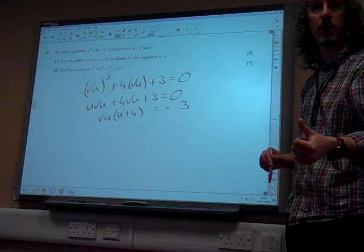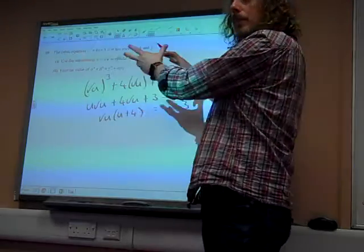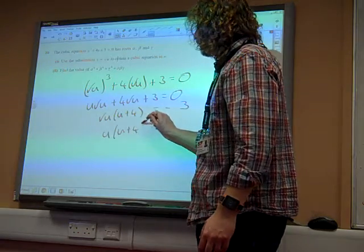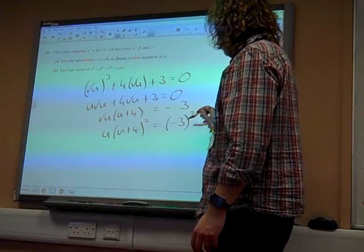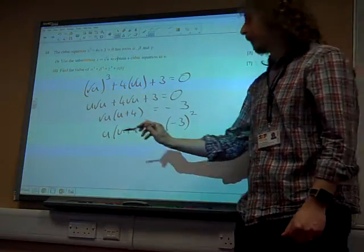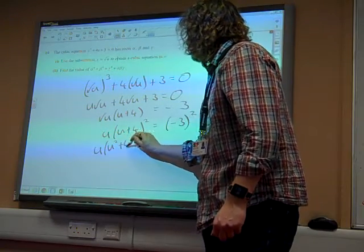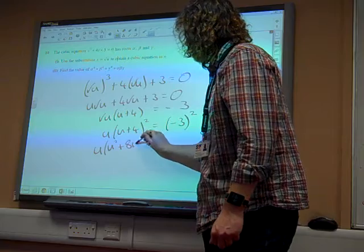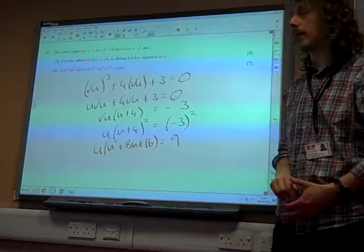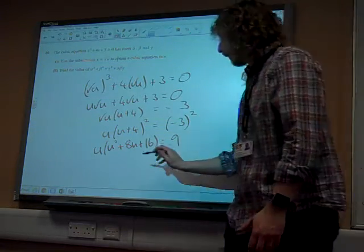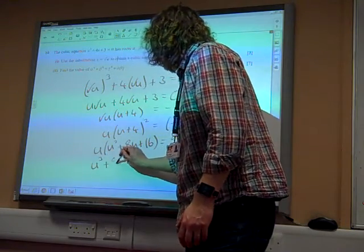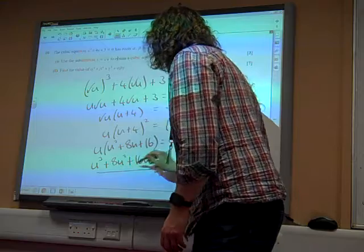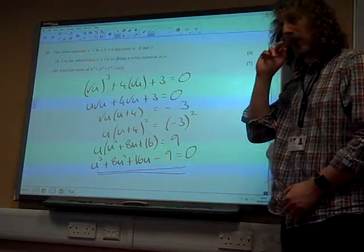Now we're going to square both sides. If we square both sides, that means square absolutely everything. So we're squaring the left-hand side, that gives us u times (u plus 4) squared. Square the right-hand side, that gives us minus 3 squared. So we've got u times (u squared plus 8u plus 16) equals 9, because 9 is 3 squared. At which point we're going to multiply out this bracket and bring the 9 back over, and there is our cubic equation in u that we were looking for.